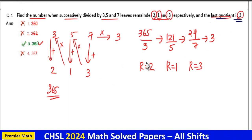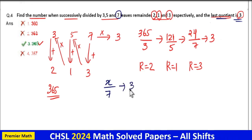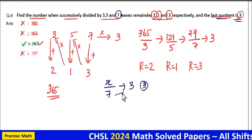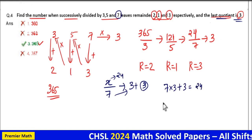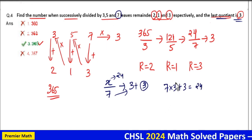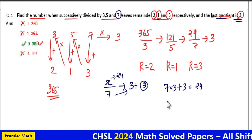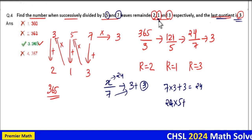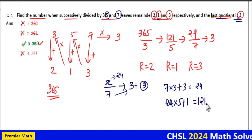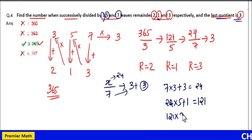The last quotient is 3, so take the last divisor 7: x divided by 7 gives quotient 3 and remainder 3, which means x equals 7 into 3 plus 3, so x equals 24. Now when y is divided by 5 it gives quotient 24 and remainder 1, so y equals 24 into 5 plus 1, which equals 121. Finally, when divided by 3, it gives 121 and remainder 2, so the number is 121 into 3 plus 2, which is 365.